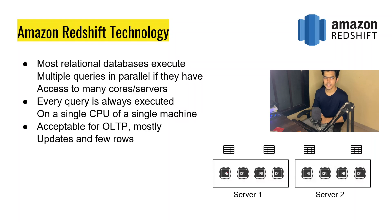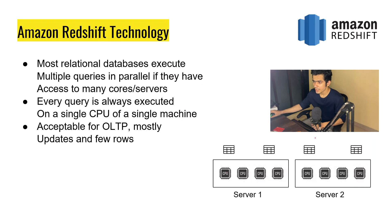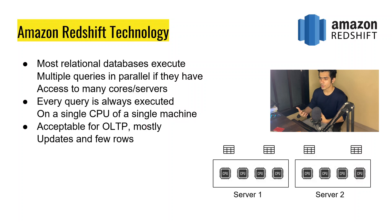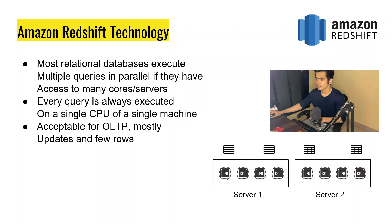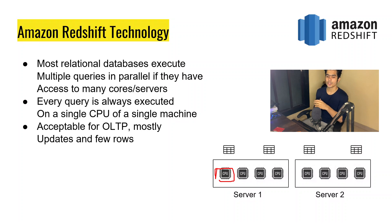Let's start by understanding how relational databases execute queries. Generally, a relational database executes a query in parallel onto multiple cores. Inside the CPU we have multiple cores, and every query is executed on a single CPU only. So let's say in a server we have four CPUs — one query will get executed on that particular server only. This is basically acceptable for OLTP because you only need to update some rows, insert, or fetch a few rows.